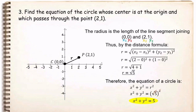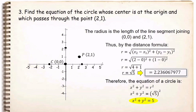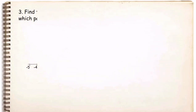To sketch the graph, since r is equal to √5, and √5 is approximately 2.236, we can approximate the value to 2 decimal places as 2.24. Using the same process, we start at the center and count 2.24 units to the right, 2.24 units upward, 2.24 units to the left, and 2.24 units downward. This gives us the graph of the circle with r = √5.